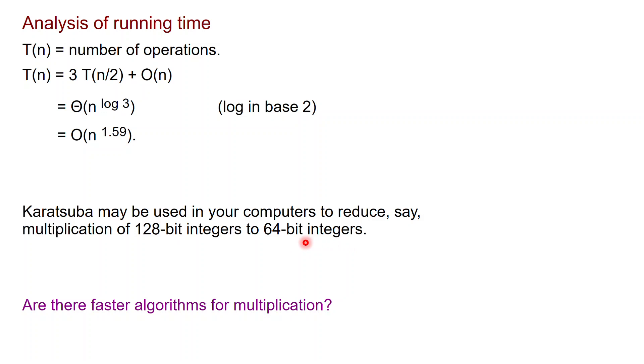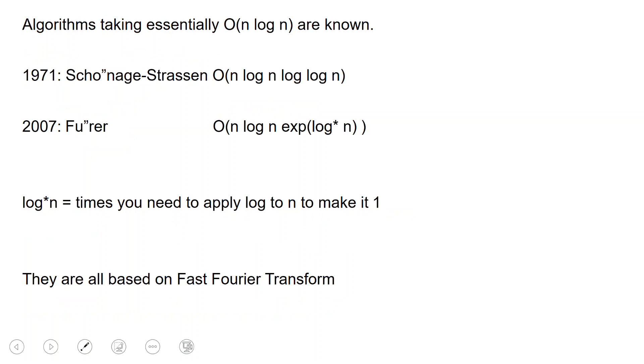Are there faster algorithms for multiplication? So after this birth, there has been many other algorithms, there has been many exciting developments. Essentially, we know algorithms which take order of n log n time. The two important breakthroughs are the 1971 Schönhage-Strassen algorithm, which runs in time order of n log n log log n.